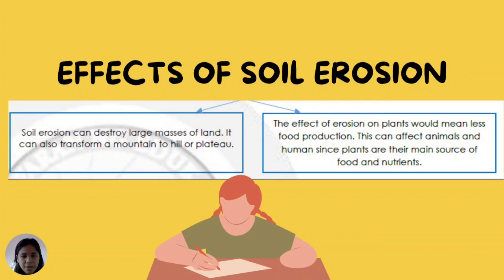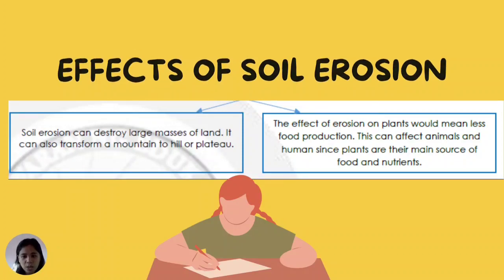To summarize the lesson: Soil erosion can destroy large masses of land and transform a mountain into a hill or plateau. The effects of erosion on plants mean less food production, which can affect animals and humans since plants are their main source of food and nutrients.